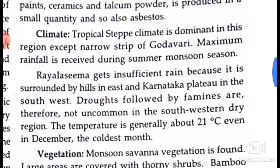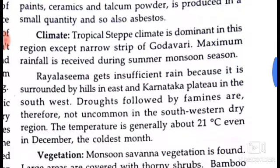The climate is tropical steppe climate, dominant in this region except for a narrow strip. The maximum rainfall is received during the summer months and season. Rayalaseema gets insufficient rain because it is surrounded by hills in the east and cannot benefit from the Deccan plateau in the southwest.